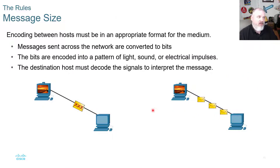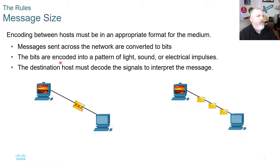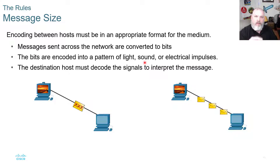The message size encoding between hosts must be in an appropriate format for the medium. Messages sent across the network are converted to bits — ones and zeros. The bits are encoded into a pattern of light, sound, or electrical impulses: light becomes bursts of light, sound becomes wavelengths, and electrical impulses are pulses of electricity. The destination host must decode the signals to interpret the message; if it can't decode it, the packets simply won't go through.